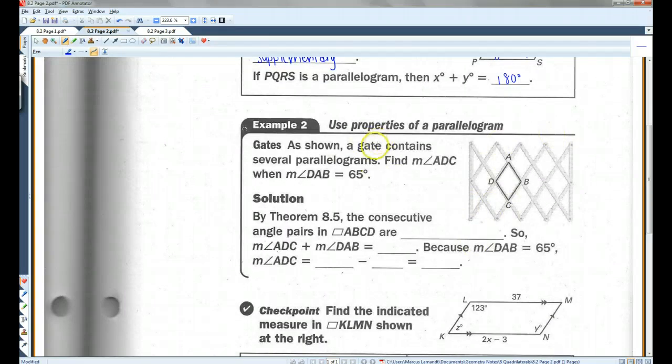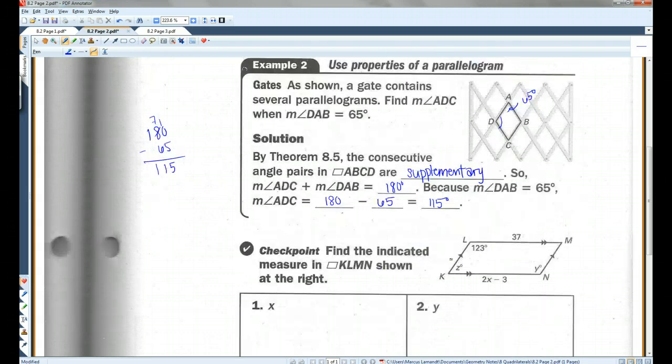Let's do an example. As shown, a gate contains several parallelograms. Find the measure of angle ADC when the measure of angle DAB, that's this angle, equals 65 degrees. So, we are trying to find ADC, that's this angle, if this angle is 65. Hopefully, you guys can see that these two angles are consecutive. And the consecutive angle pairs in a parallelogram are supplementary. So, the measure of angle ADC plus the measure of angle DAB equals 180. Because the measure of angle DAB equals 65, this angle has to be 180 minus 65. 180 minus 65. I think that's 115. Yep. 115 degrees.